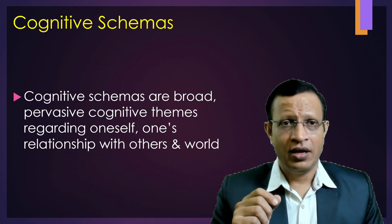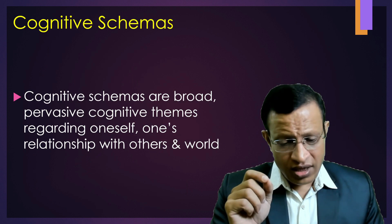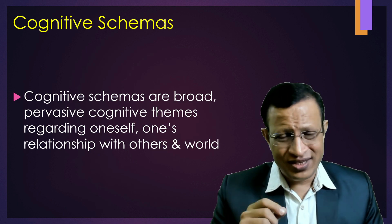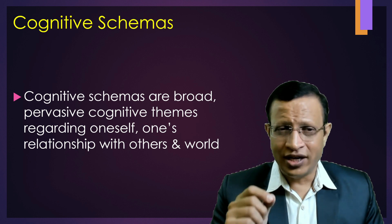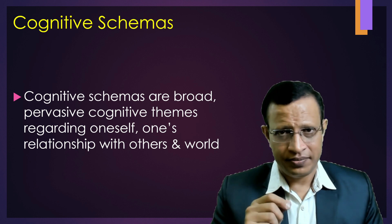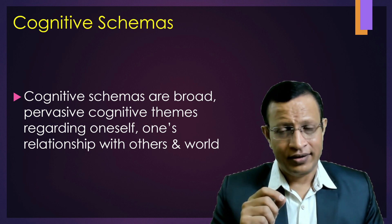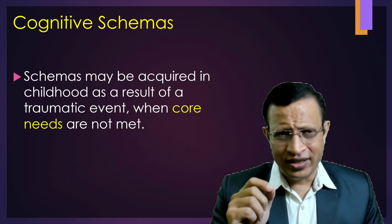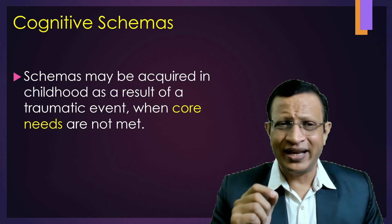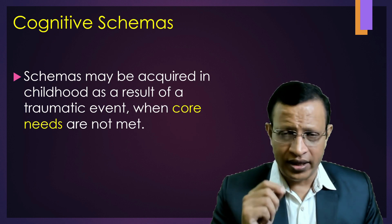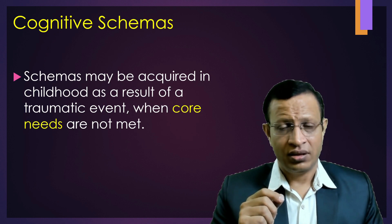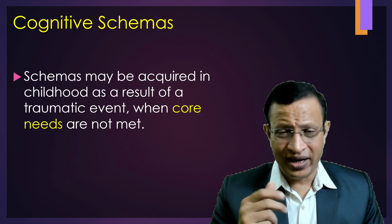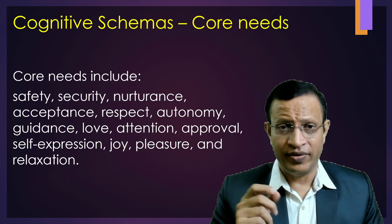Basically, cognitive schemas are broad, pervasive cognitive themes regarding oneself, one's relationship with others, and the world. Schemas may be acquired in childhood as a result of traumatic events when core needs are not met. If a child's needs are not met and there is a traumatic event, then the schemas will be formed.